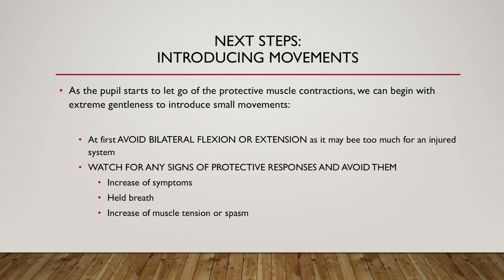The next step will be to introduce, with extreme gentleness, small movements. Typically, we try to avoid bilateral flexion and extension at the get-go — meaning both sides of the spine bending forward or bending backward — but we may start from unilateral flexions or extensions. We need to watch for any signs of protective responses, which could be the person holding their breath, suddenly bracing, or a change in the state of tissues underneath your hands, or the client may report feeling an increase of pain. Any time we detect these protective responses, we want to change our approach so the system is yielding and releasing and feeling safer rather than bracing itself for potential damage.